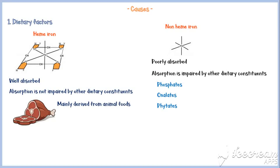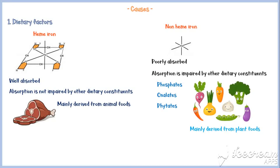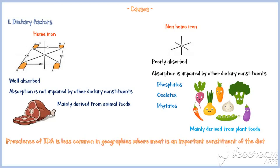In contrast, non-heme iron is mainly derived from plant foods. Therefore, the prevalence of iron deficiency anemia is less common in geographies where meat is an important constituent of the diet, while less intake of animal foods may lead to iron deficiency anemia.